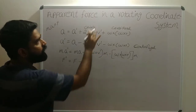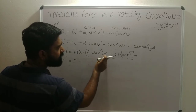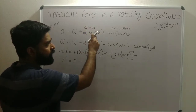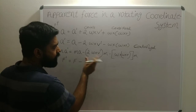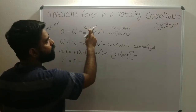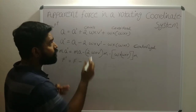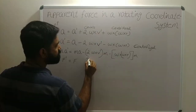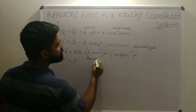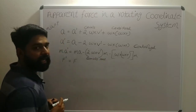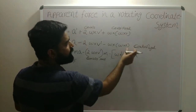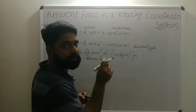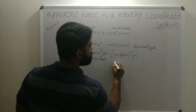The term 2ω×v' is the Coriolis acceleration. When multiplied by m, it becomes the Coriolis force. Similarly, ω×(ω×r) is the centrifugal acceleration, and when multiplied by mass m, this term becomes the centrifugal force.